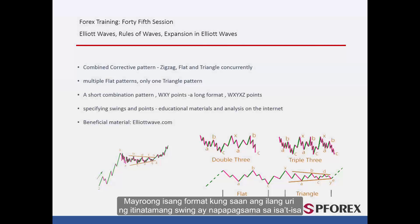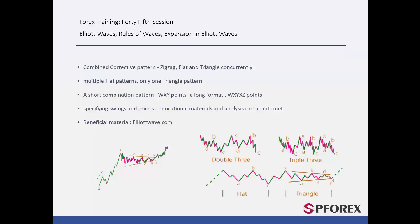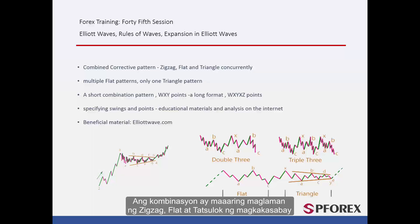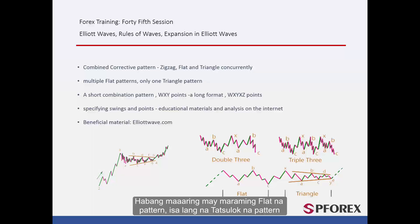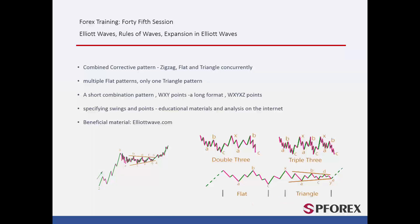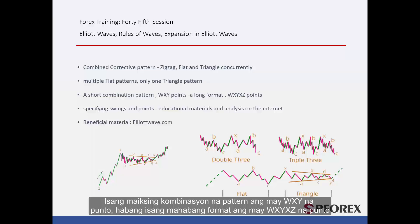There is a format in which some corrective swing types are combined with each other. The combination can consist of zigzag, flat and triangle concurrently. While there can be multiple flat patterns, only one triangle pattern can form, which will be the last pattern of this combination. A short combination pattern has W, X, Y points, while a longer format has W, X, Y, Z points.